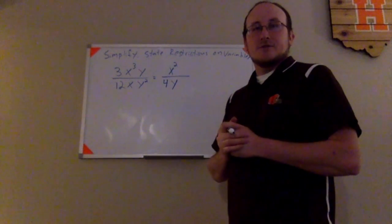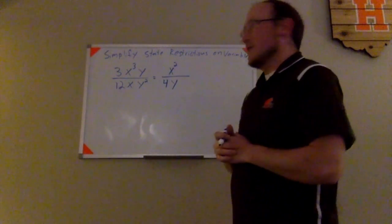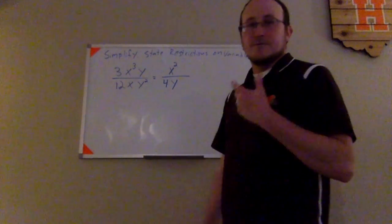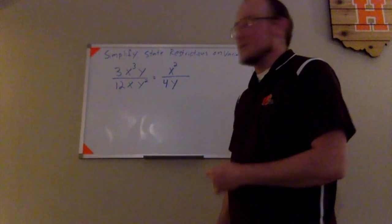So now let's talk restrictions on variables. There it is already simplified, and now we've got to talk about the restrictions on the variables, the values that x and y are not allowed to be.